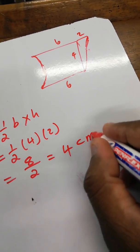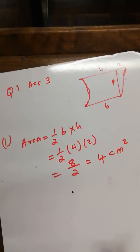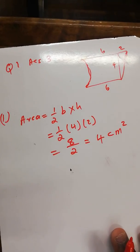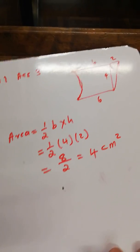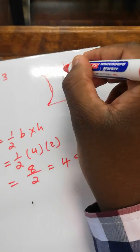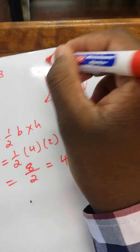Secondly, we calculate the rectangle. For a rectangle, area equals length times breadth. So it was six times four.